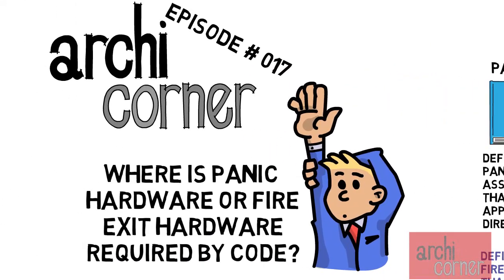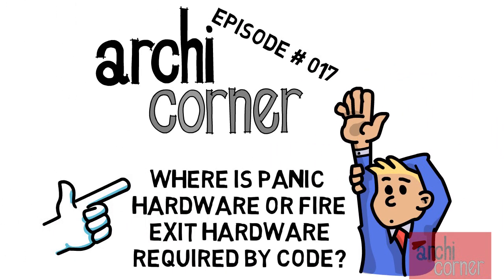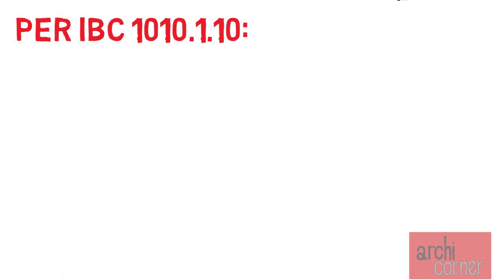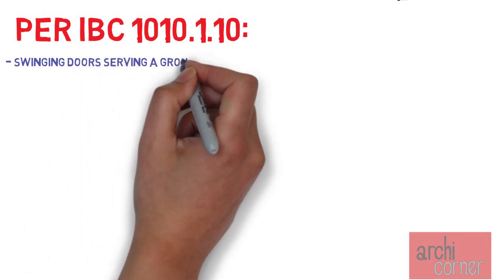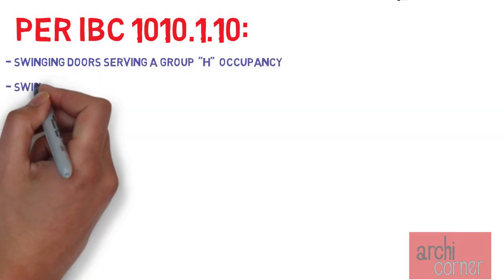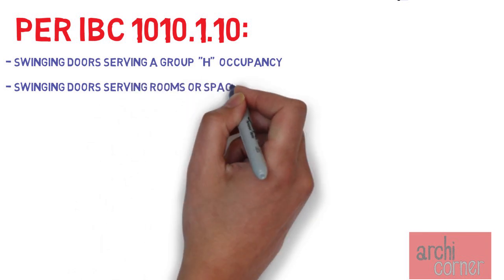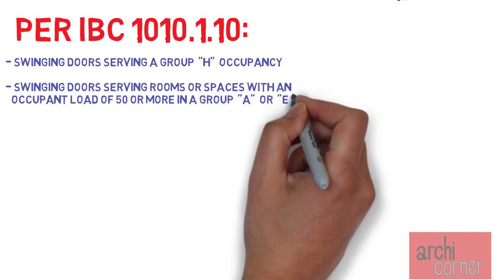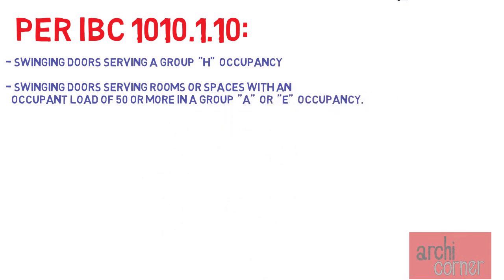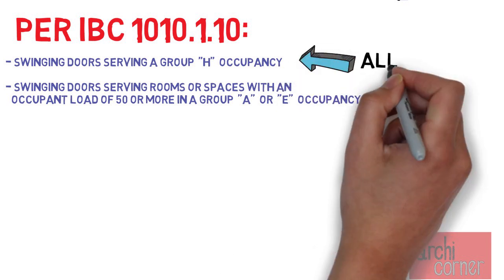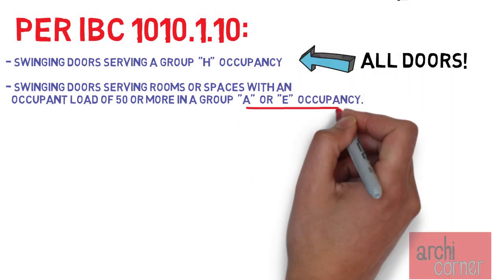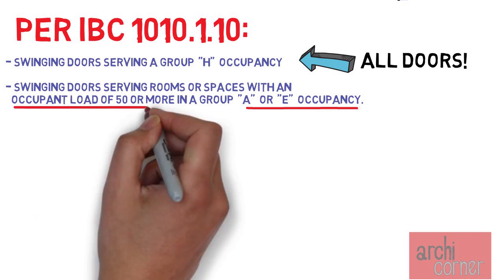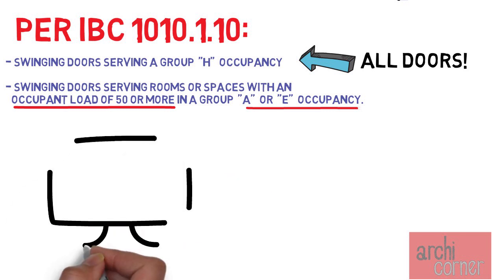So where is panic hardware or fire exit hardware required by code? IBC section 1010.1.10 states that you need panic hardware on swinging doors serving a Group H occupancy, and on swinging doors serving rooms or spaces with an occupant load of 50 or more in a Group A or E occupancy. For Group H occupancies they go on all swinging doors, but in Groups A and E they are required only in rooms and spaces with an occupant load of 50 or more.